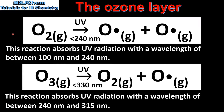We'll finish the video by looking at the significance of the UV radiation absorbed in these two reactions. The first reaction, which is the first step in the formation of ozone, absorbs UV radiation with a wavelength of between 100 and 240 nm. The second reaction, in which ozone dissociates to form oxygen and an oxygen free radical, absorbs UV radiation with a wavelength of between 240 and 350 nm. To summarize, the wavelengths of UV radiation absorbed in these two reactions correspond to UVB and UVC radiation, so the formation and destruction of ozone absorbs harmful UV radiation.